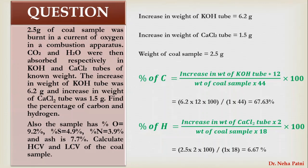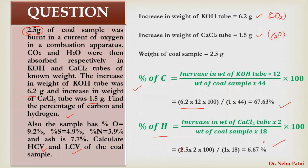For this type of question, you have a 2.5 gram coal sample. Write the increase in weight for the KOH tube and CaCl₂ tube — these correspond to CO₂ and H₂O formed respectively. Using the formula, % C = (increase in weight of KOH / sample weight) × (12/44) × 100, giving 67.6%, and % H = (1.5 / 2.5) × (2/18) × 100, giving 6.67%. You also need to find GCV and LCV — NCV = GCV − latent heat, where latent heat = 0.09 × % H × 587.